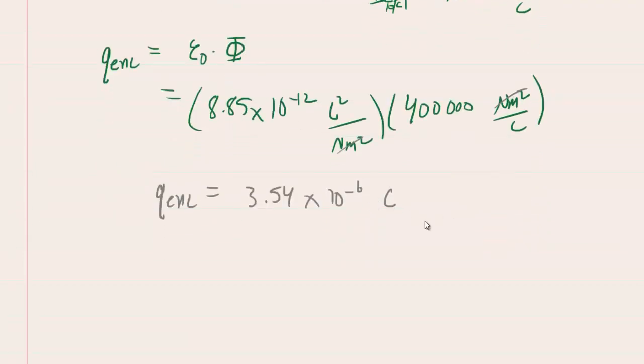If you need to convert that into micro coulombs, you can recall that one micro coulomb is 10 to the minus sixth coulombs. So this would work out to 3.54 micro coulombs. That's the enclosed charge within that Gaussian cube.